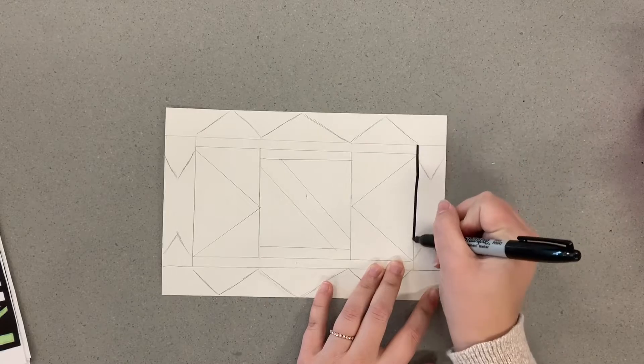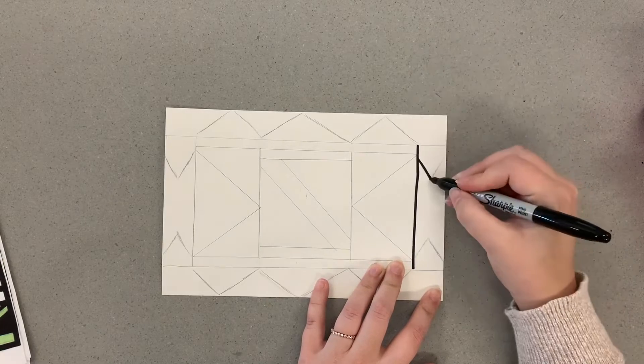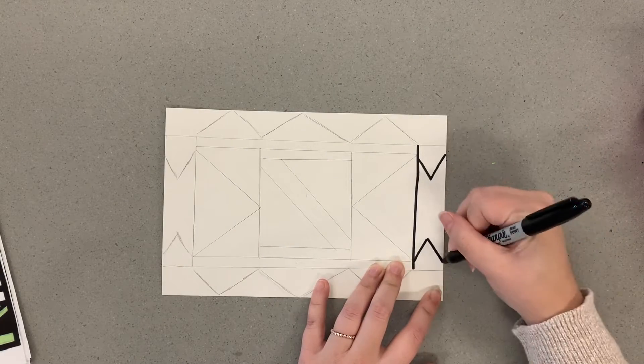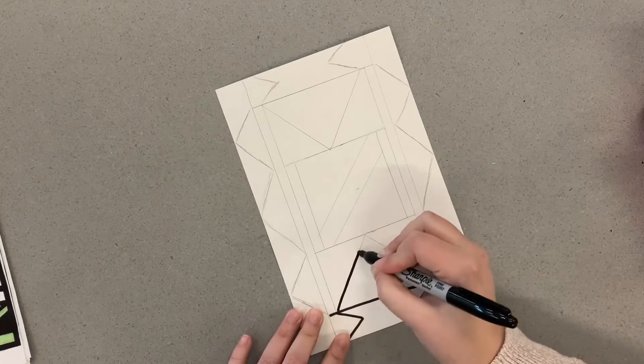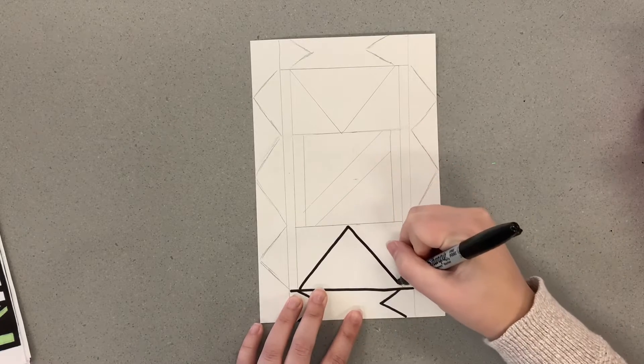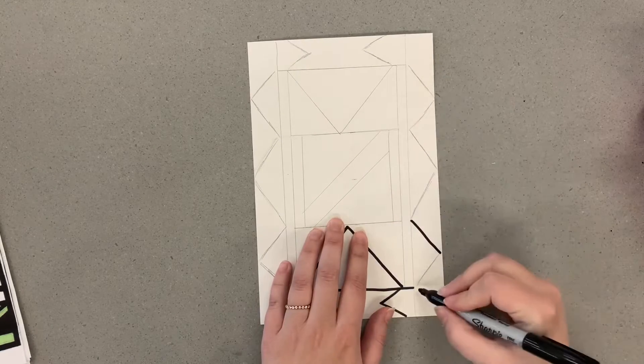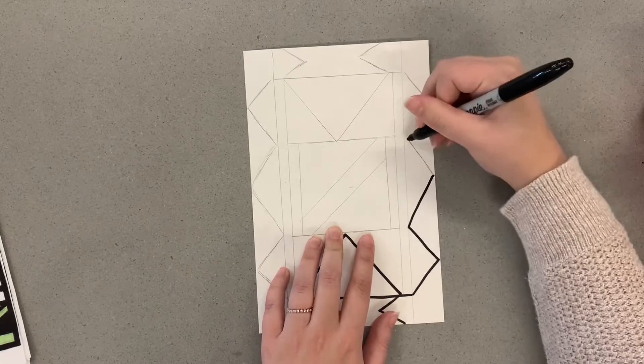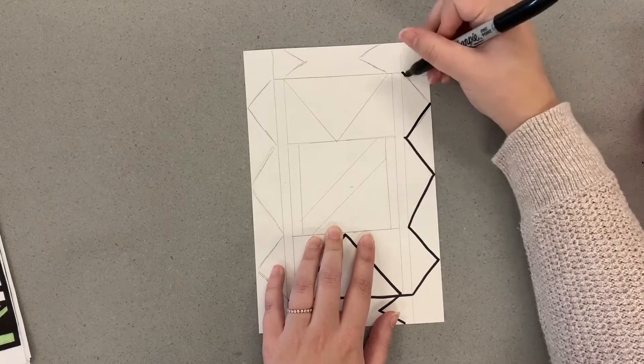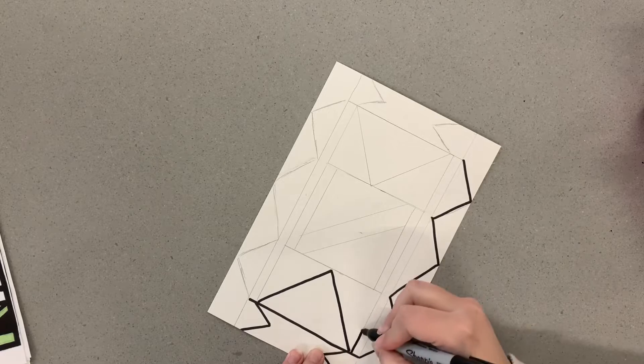When you're done with your pencil, you're going to trace all of those lines with a black Sharpie. If there's anything you want to fill in with your Sharpie or make a line a little bit thicker, you could do that, or you could always go back and do that later as well. Just make sure you're taking your time on this, trying to keep those lines straight since you used your ruler before.